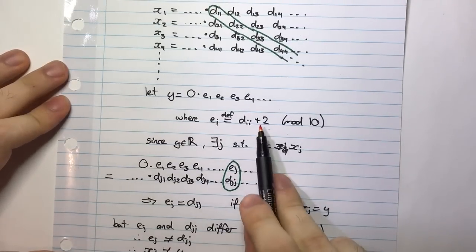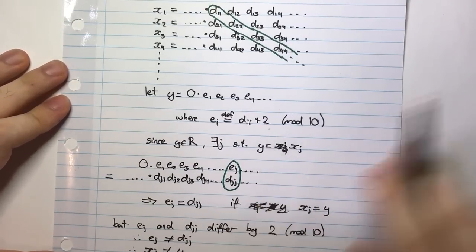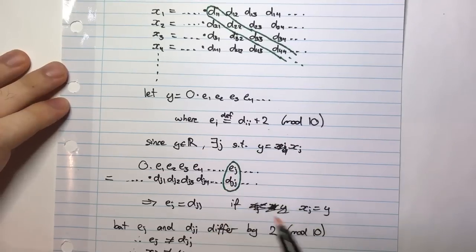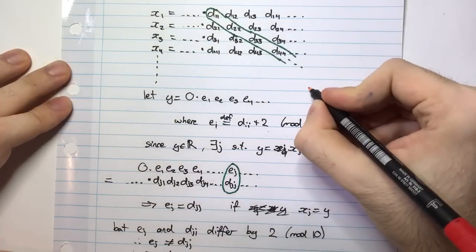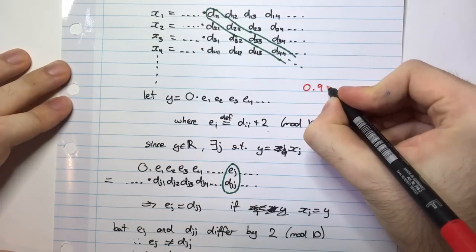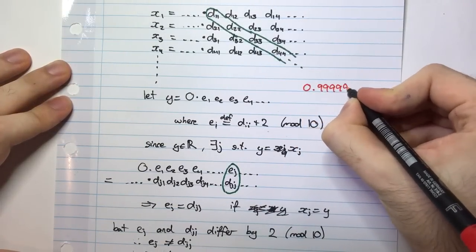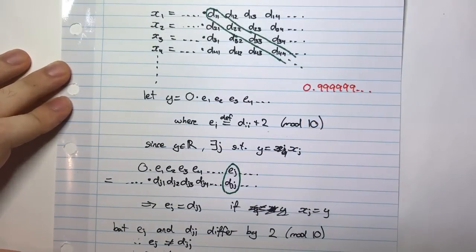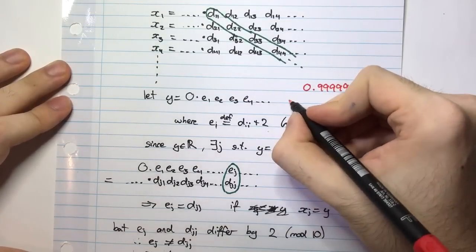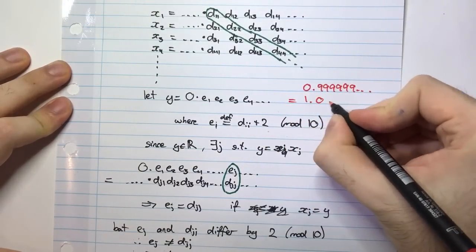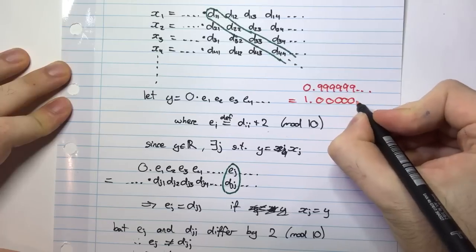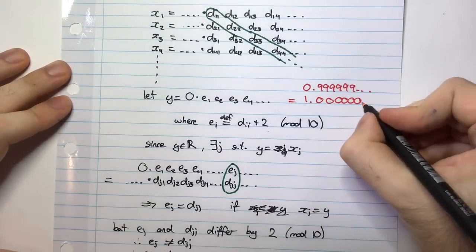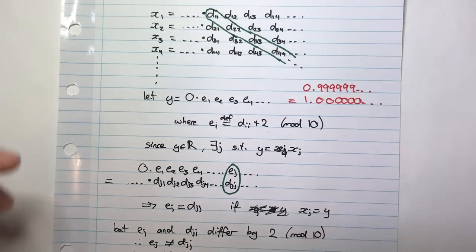Well, it's important because if I chose plus 1 mod 10, we would have a problem. Any other number, plus 3, plus 4, they would be fine, but plus 1 would be a problem. Why is that? Well, if I wrote 0.99999 and so on, this is also equal to 1.000000 etc.